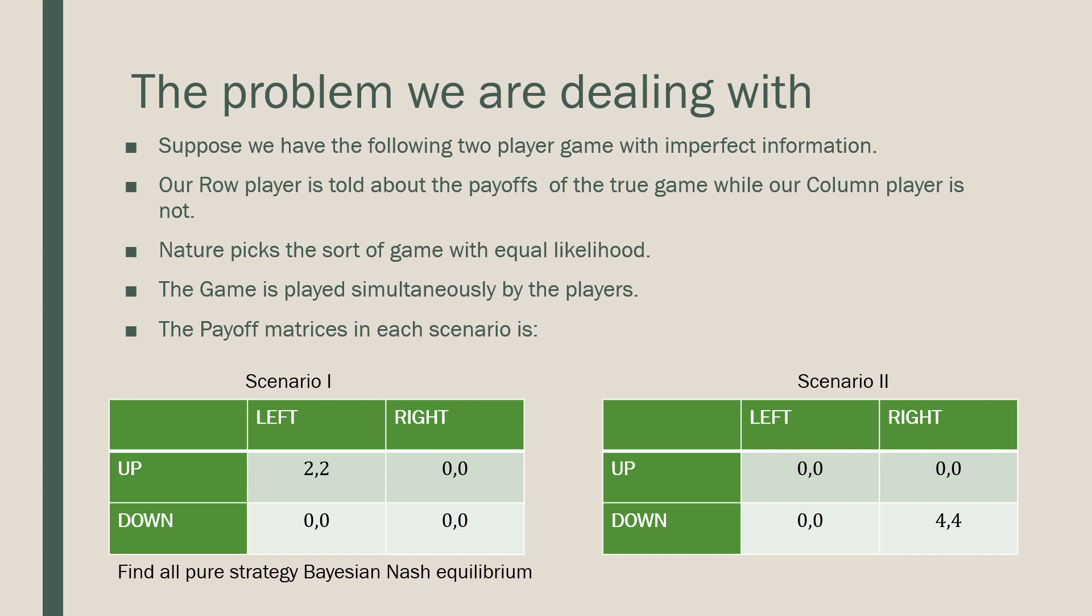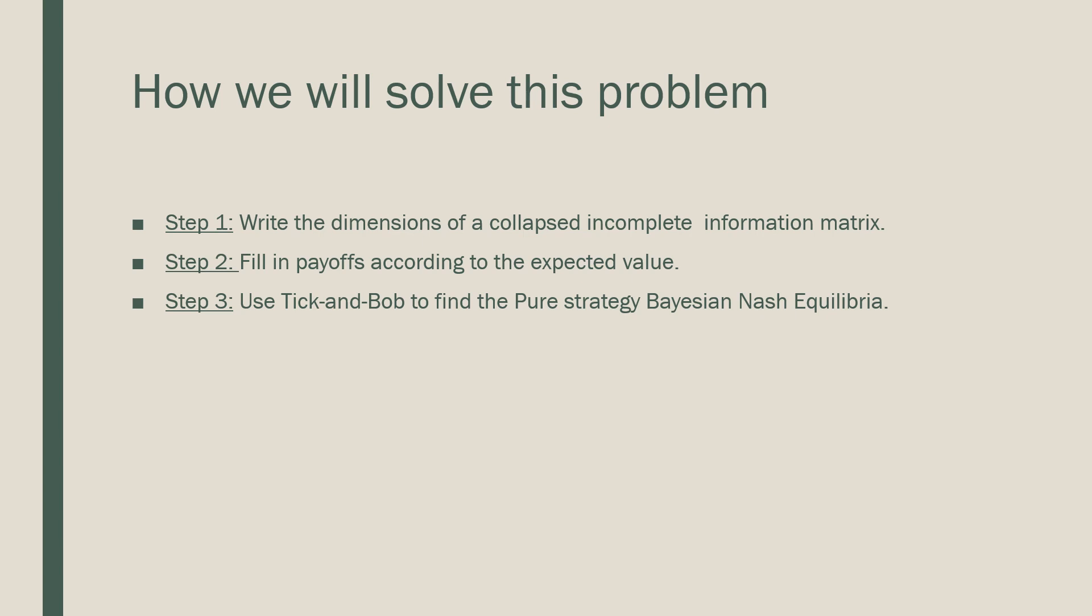So let's see how we do that. We're going to follow this three-step procedure that I laid out over here. Step number one is that we're going to write the dimensions of a collapsed incomplete information matrix, a strategic form matrix to illustrate our problem. Step number two is that we're going to fill in our payoffs according to the expected value. This probability is going to come from our probabilities for nature. And step number three is that we're going to use Tick and Bob to find the pure strategy Nash equilibria.